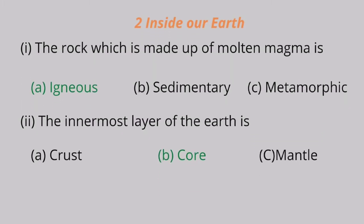Chapter 2: Inside Our Earth. Question 1: The rock which is made up of molten magma is A. Igneous, B. Sedimentary, C. Metamorphic. Igneous is the correct answer.